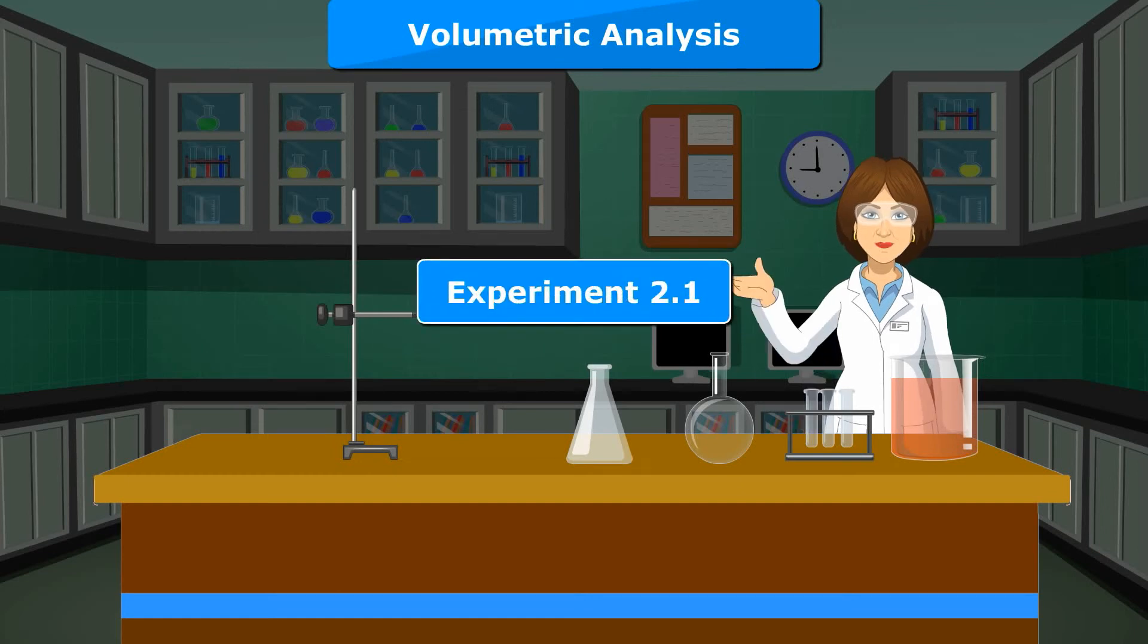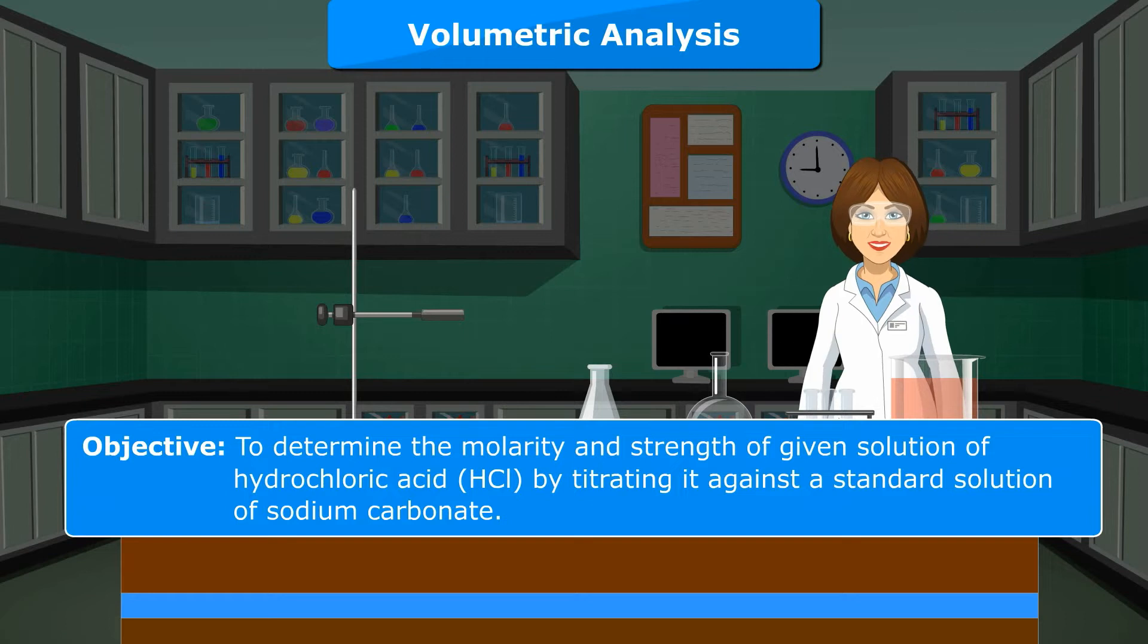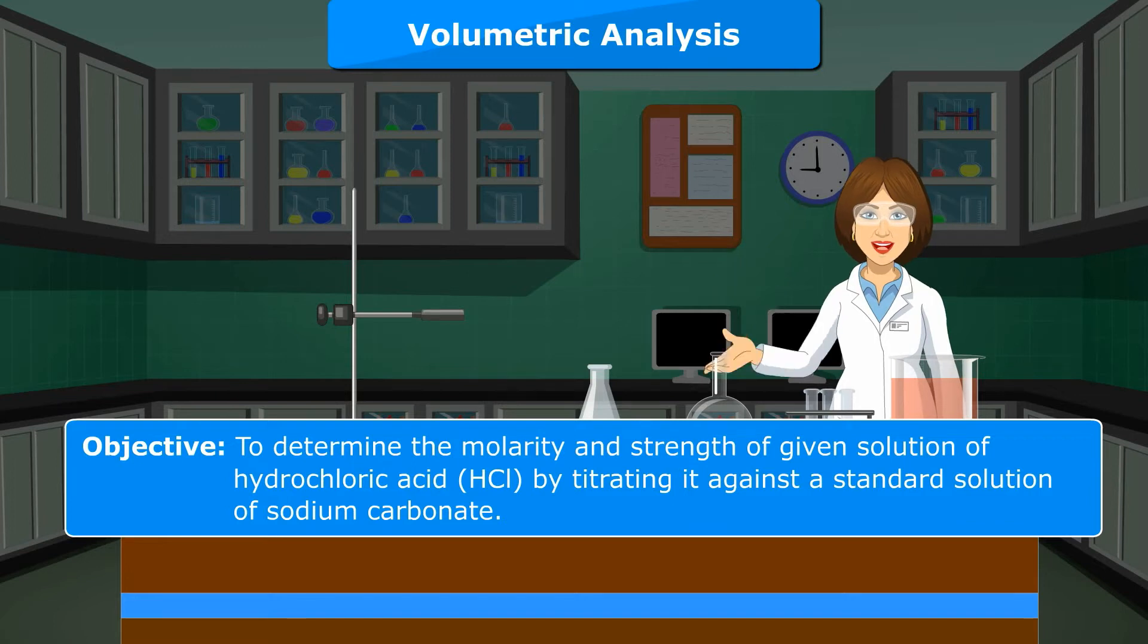Experiment 2.1. Objective: To determine the molarity and strength of given solution of hydrochloric acid (HCl) by titrating it against a standard solution of sodium carbonate.